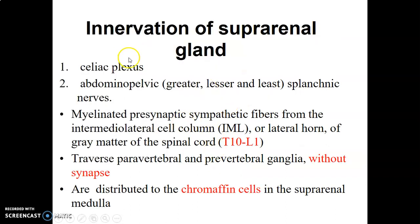What is the innervation of the suprarenal gland? You have sympathetic stimulation through the celiac plexus and abdominopelvic splanchnic nerves — these are the greater, lesser, and least splanchnic nerves. The myelinated sympathetic fibers have presynaptic and postsynaptic components. The presynaptic fibers come from the lateral horn of the spinal cord from T10 to L1.